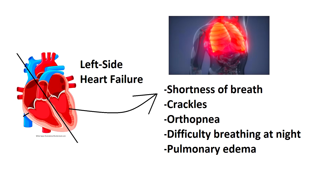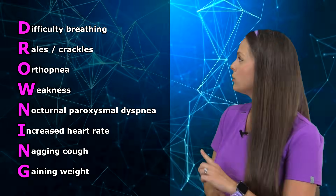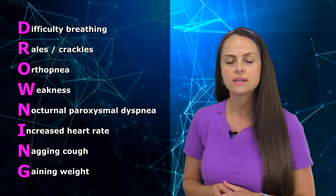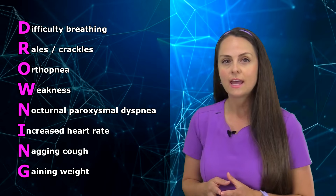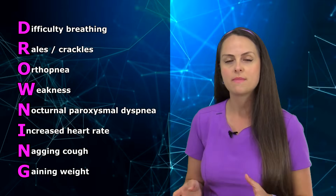So whenever we're thinking about the signs and symptoms of left sided heart failure, you want to remember that it's going to present with mainly pulmonary signs and symptoms. And these signs and symptoms are really going to come from all that fluid that's backing up in the patient's lungs causing pulmonary edema. So it's really almost like they're drowning on their own fluid. So to help us remember those signs and symptoms of left sided heart failure, let's remember the mnemonic DROWNING. So D is for difficulty breathing. R is for rales, which is also known as crackles. And this is an abnormal sound that usually indicates that your patient has pulmonary edema. And here's some sample audio of what crackles may sound like.